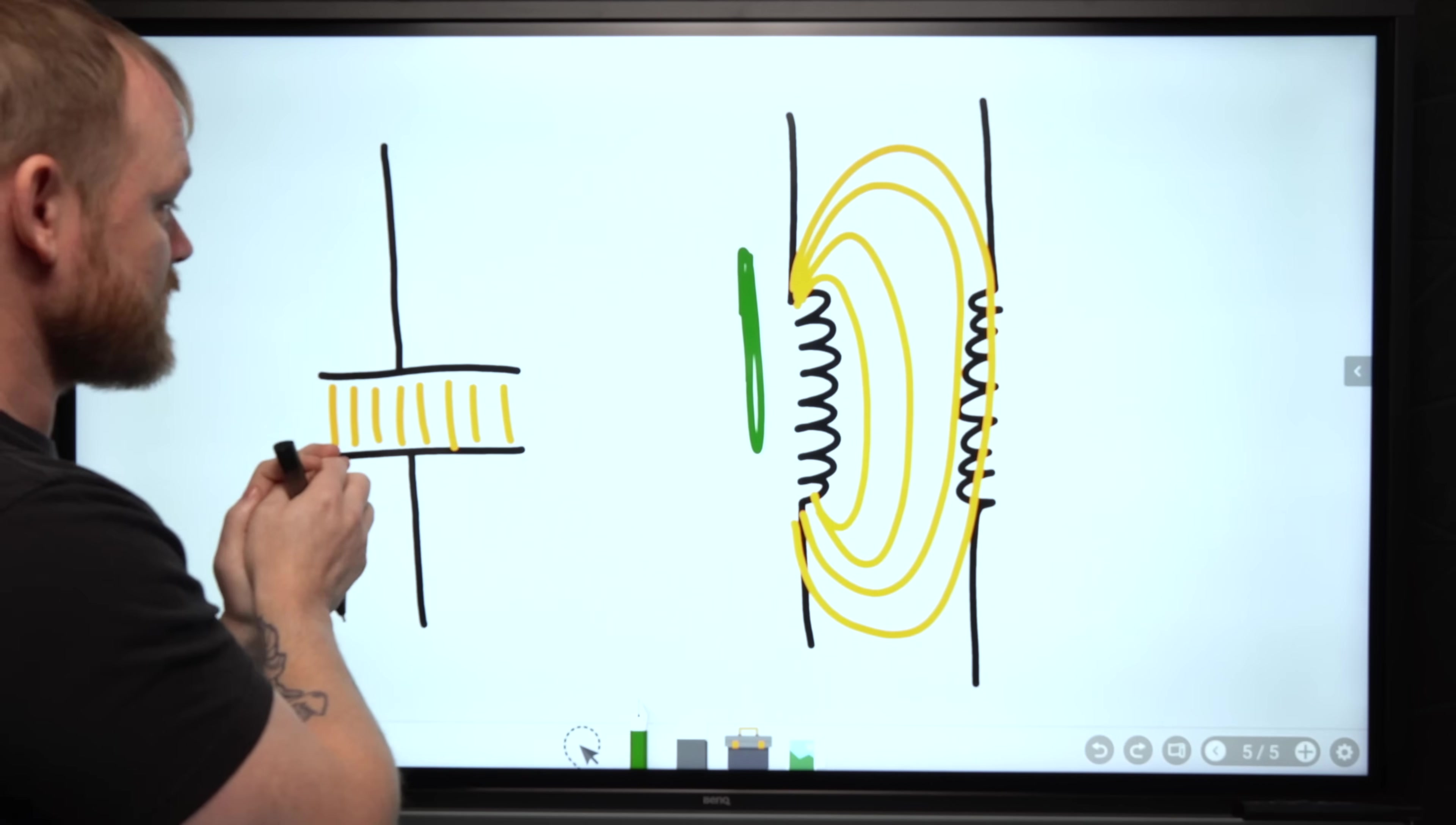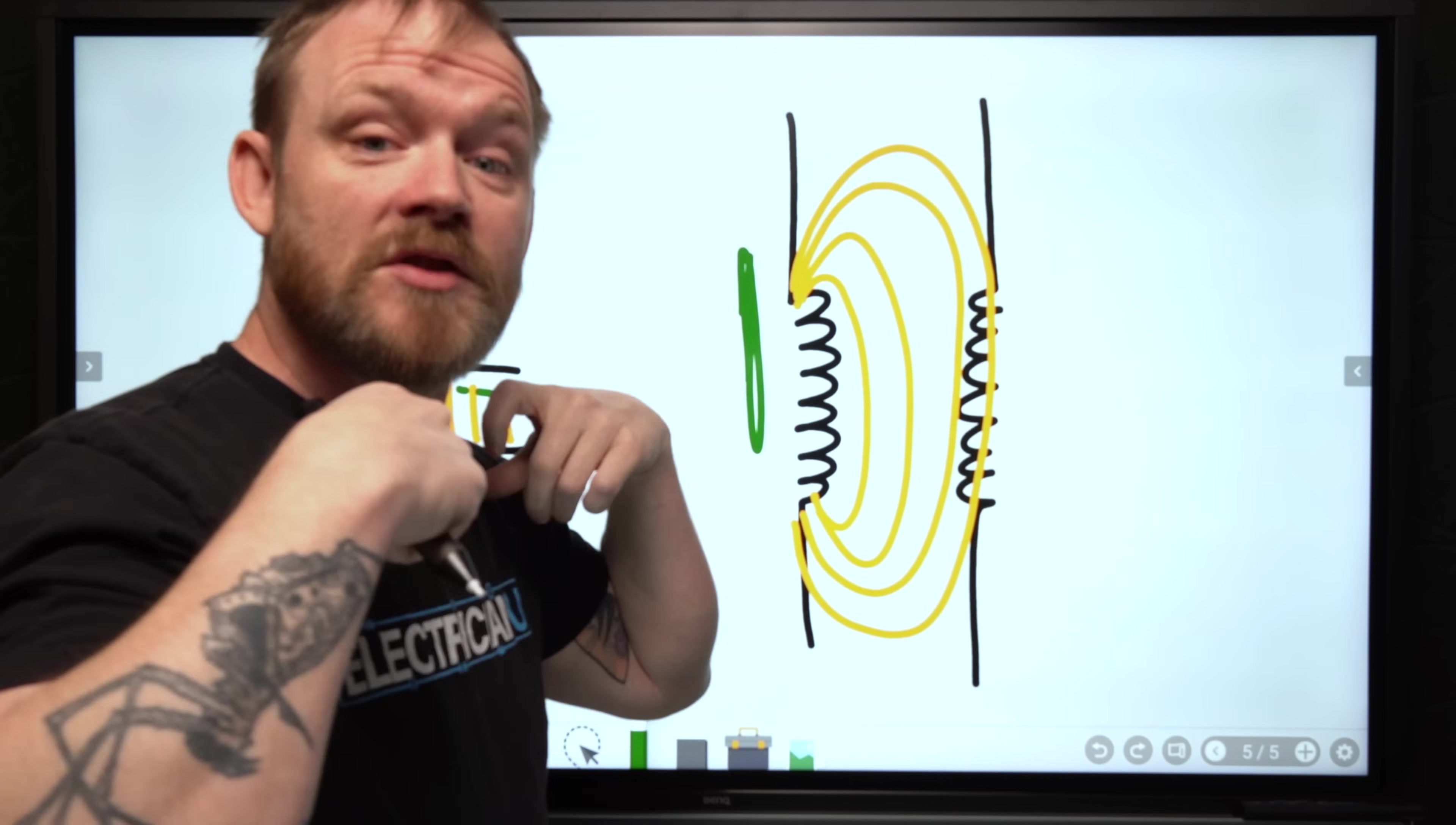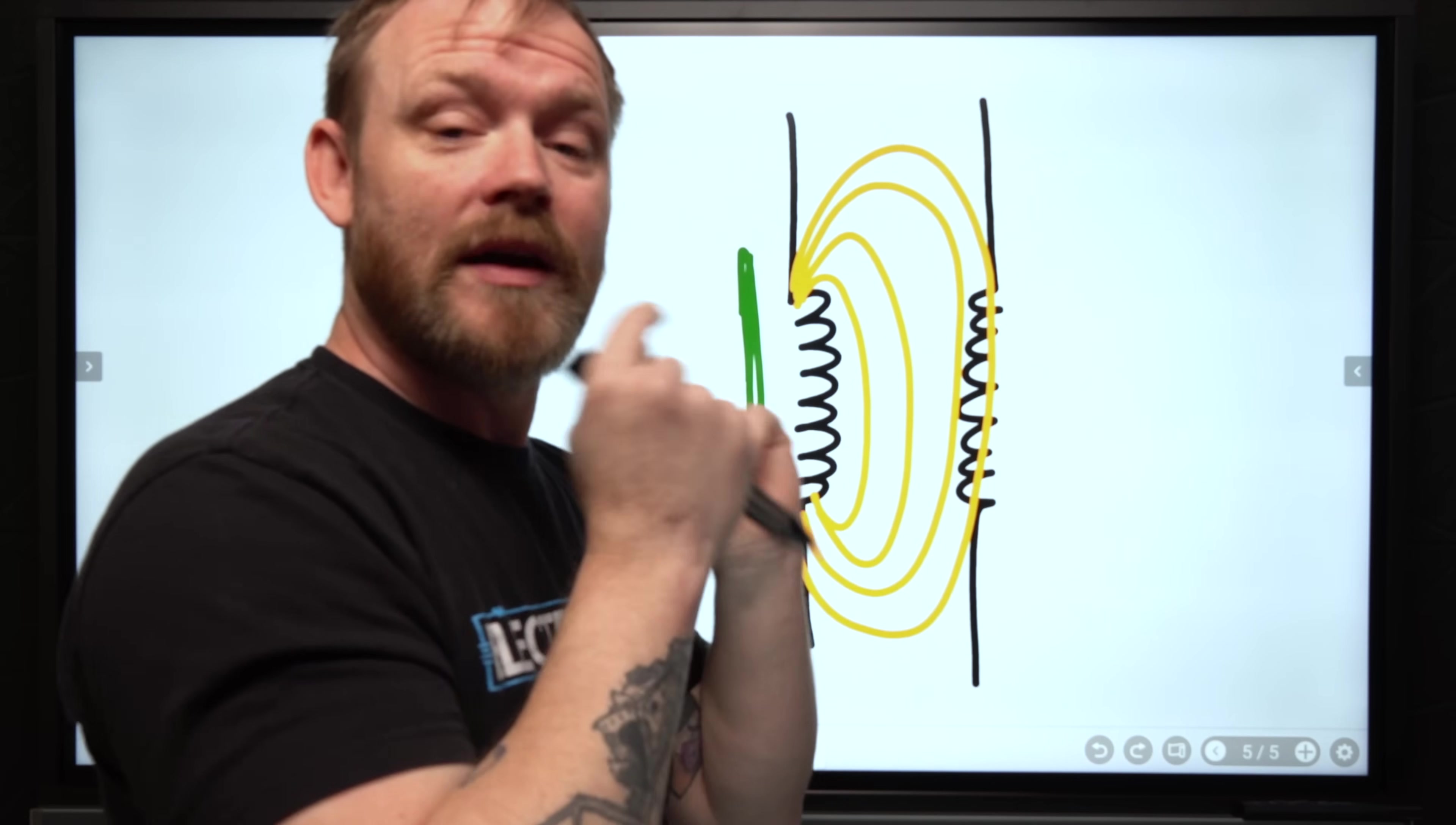But the same phenomenon happens with capacitors, but rather than the magnetic field expanding and collapsing to make the other inductor move, with a capacitor we have one plate here and one plate here. And so when we have charges that's flowing back and forth, we're developing a whole bunch of charge on one side every time these charges move back and forth. Well when we create a whole bunch of charge on one side, we have the opposite charges on the other side that are influenced by that through air like this. So if we build up a whole bunch of charges on one side, we're gonna build up a whole bunch of opposite charge on the other side.